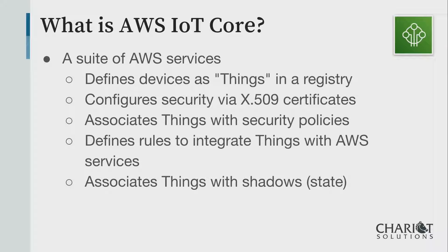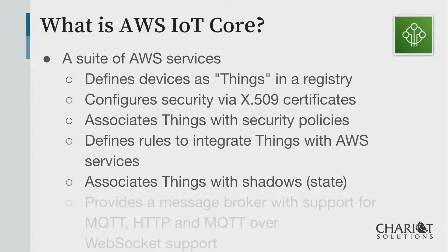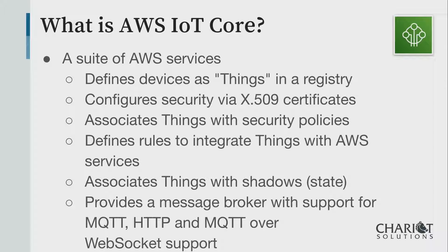IoT Core also associates your device with a device shadow. The device shadow is a piece of state that can be held on AWS to keep track of state, then sent down to the device and updated from the device — for example, data readings or configuration settings. The broker supports MQTT, and MQTT can use certificates to identify the communicating device. It can also do HTTP and WebSockets with MQTT.